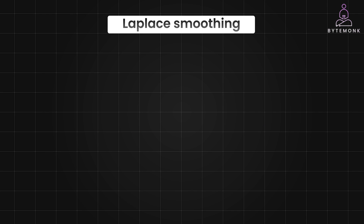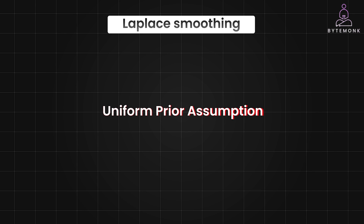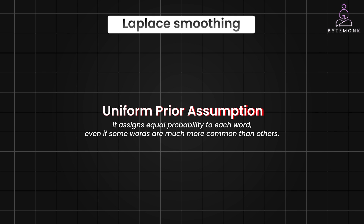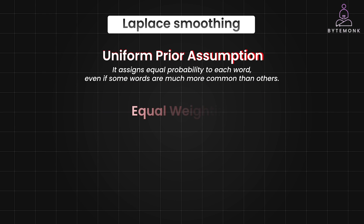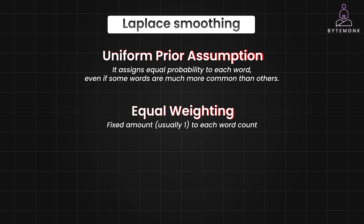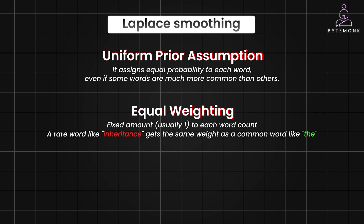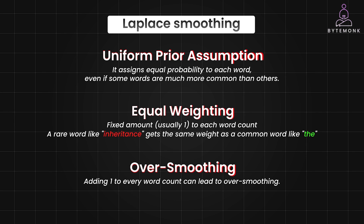While Laplace smoothing is simple and effective, it's not the only solution for the zero-probability problem. Laplace smoothing implicitly assumes a uniform prior distribution over all words in the vocabulary, meaning it assigns equal probability to each word even if some words are much more common than others. In reality, language has a non-uniform distribution, with some words appearing far more frequently than others, and this can lead to inaccurate probability estimates. Laplace smoothing also adds a fixed amount — usually one — to each word count, giving equal weight to all words regardless of their actual frequency. For example, a rare word like 'inheritance' gets the same weight as a common word like 'the,' which may not reflect the true importance of each word. In cases with large vocabularies or small training data, adding one to every word count can also lead to over-smoothing, where the probabilities become too close to each other, making it harder for the model to distinguish between different classes.